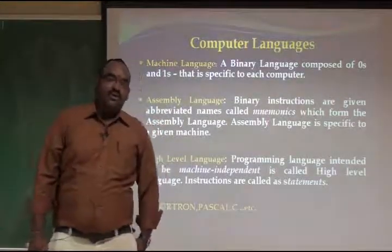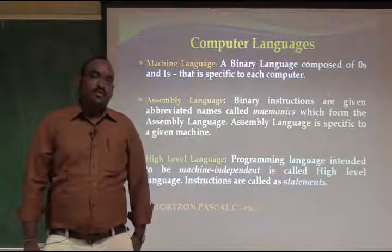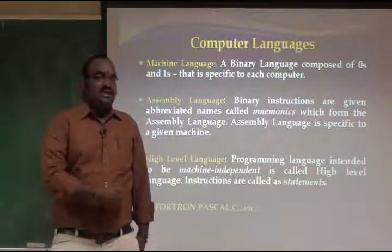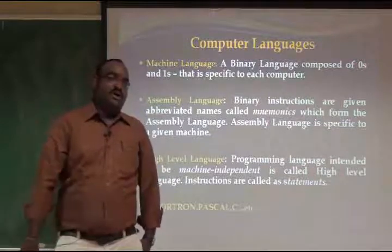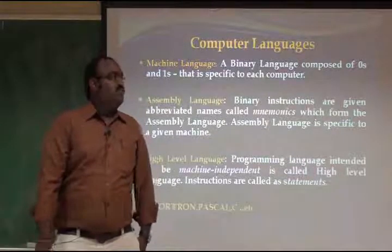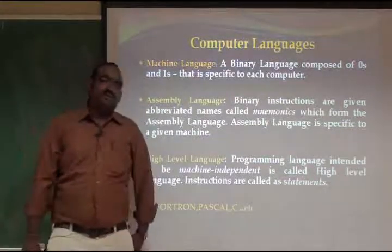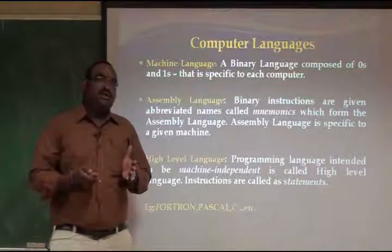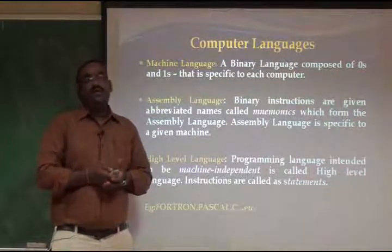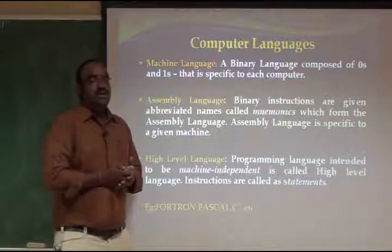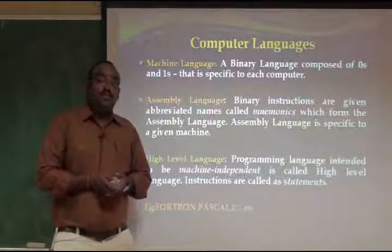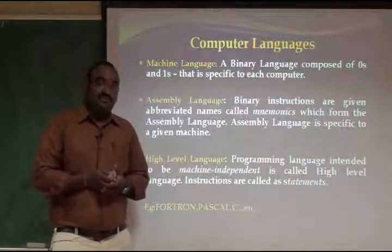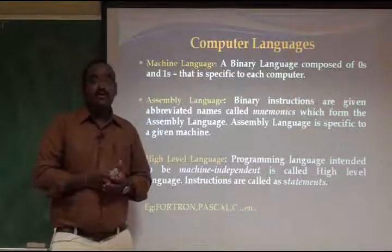Before starting about C programming, we must know the history of how C programming was developed. There are a lot of languages in computing. The first one we call the machine language. The machine language is how the machine recognizes what you have written. Basically, it is a binary language — a combination of zeros and ones.